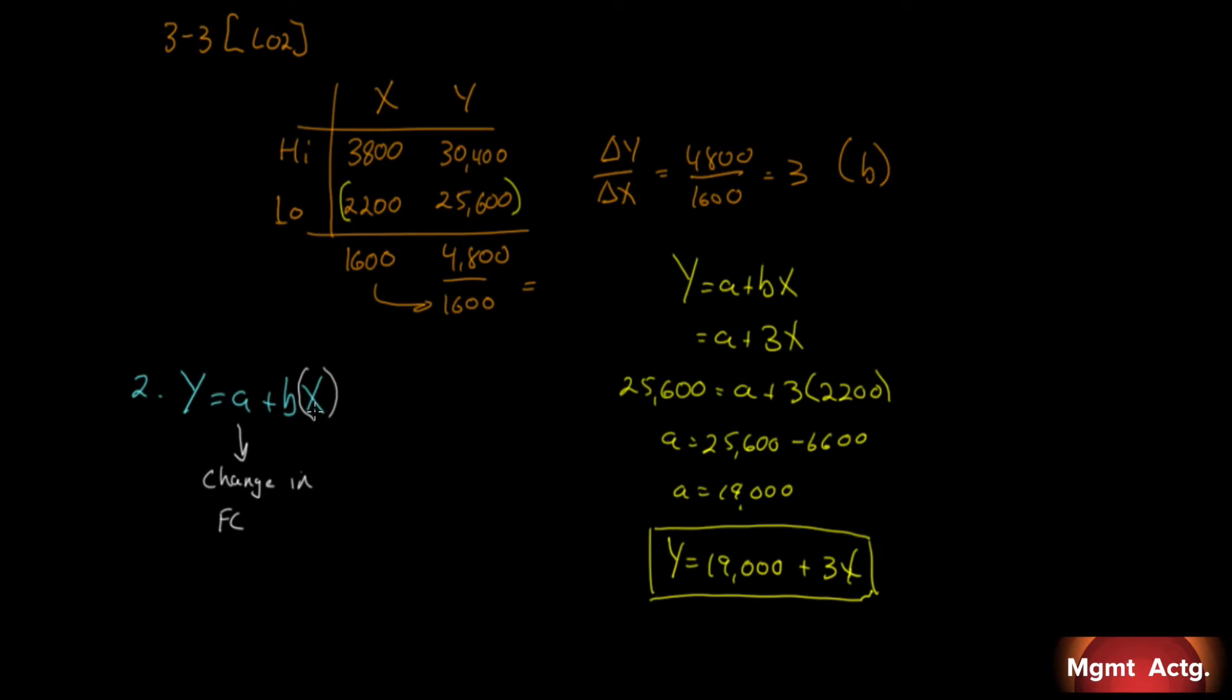There could be a change in fixed costs - we haven't touched the patients. Holding patients constant, if there's a change in fixed costs, it could affect Y. Also, a change in variable costs per patient could affect Y. If we hold X constant at 2,200, we know the cost is $25,600. But if our fixed costs increase from $19,000 or variable costs increase from $3 per patient, it would affect Y.